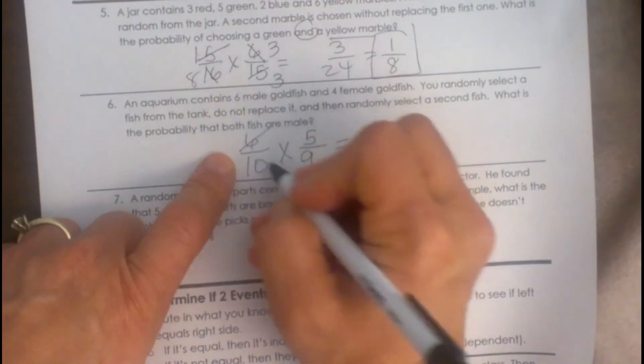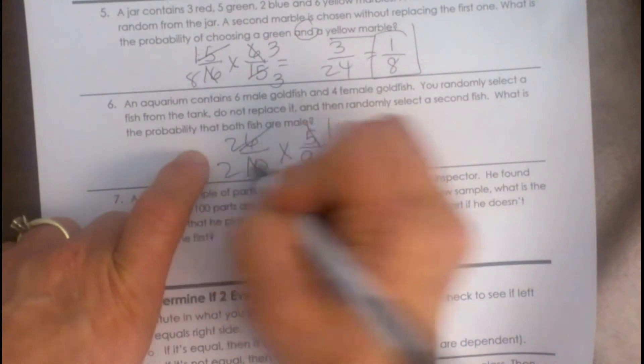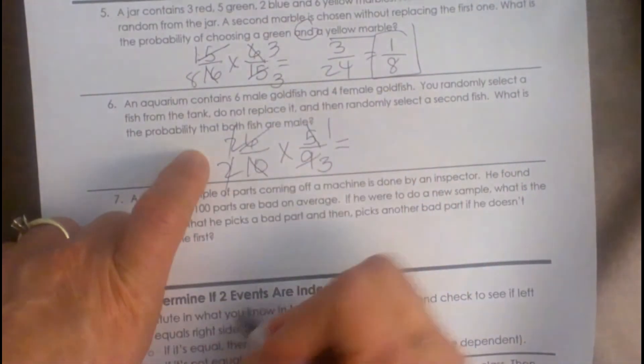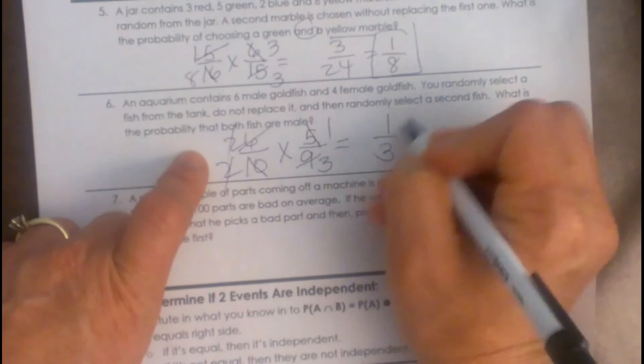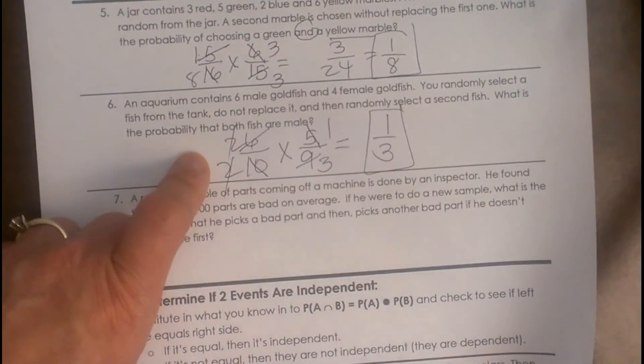Okay I am going to take a 3 out of this and a 3 out of this and a 5 out of this and a 5 out of this and look the 2s cancel. So what is that? 1 third. So 1 third of the time we would choose a male and then another male fish.